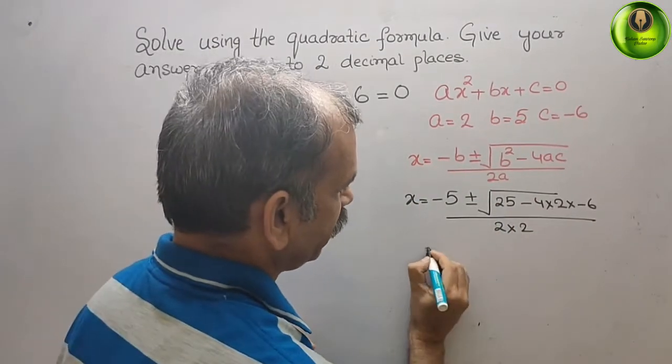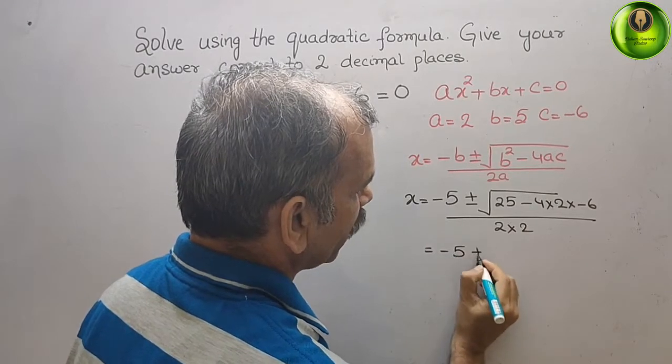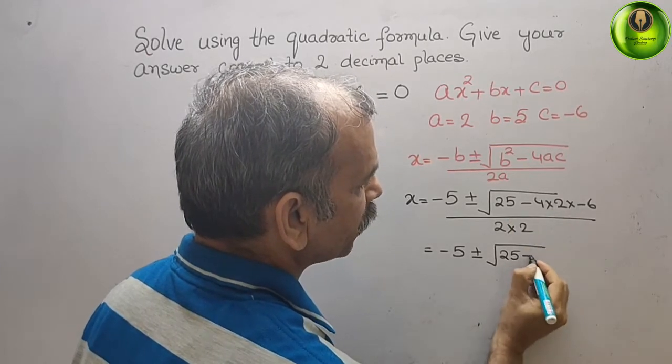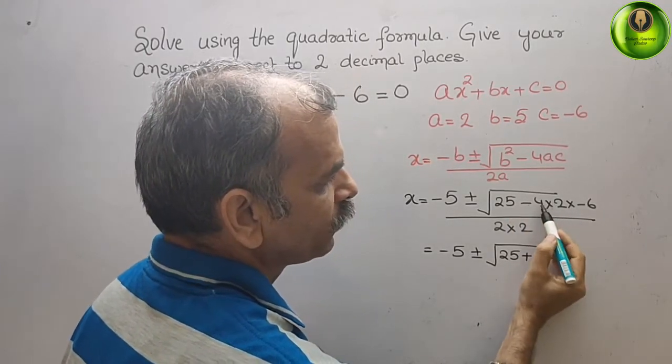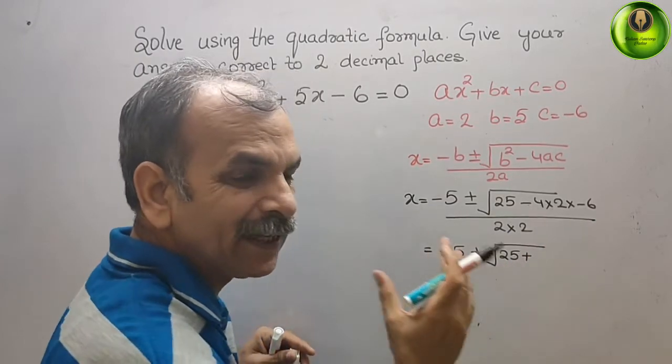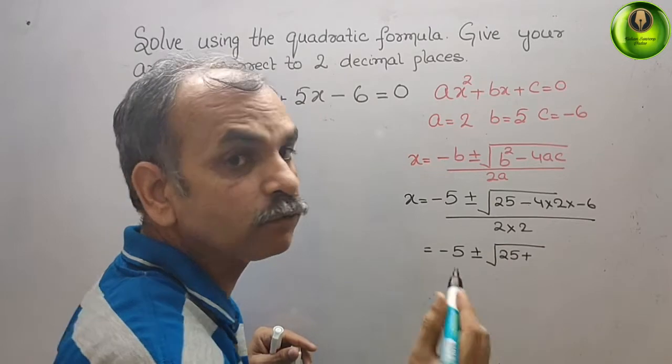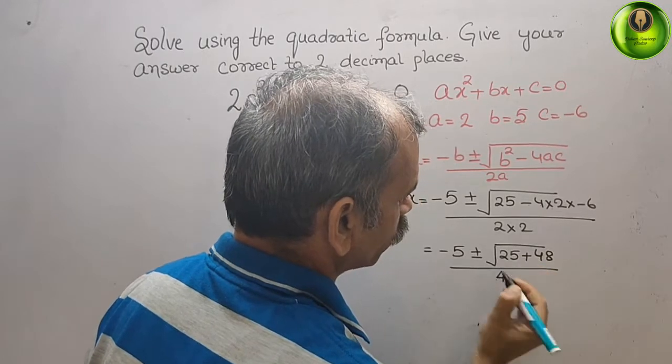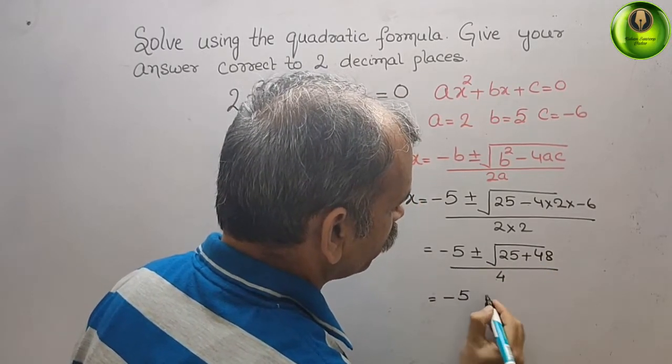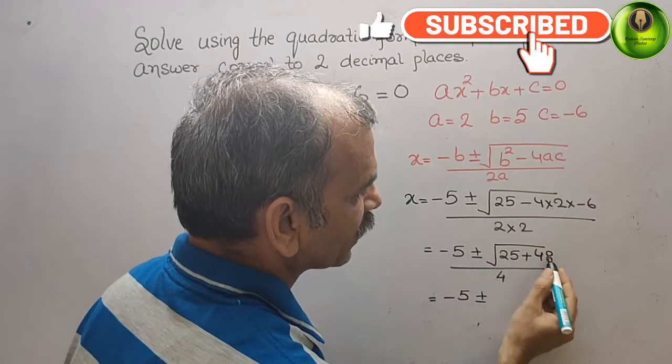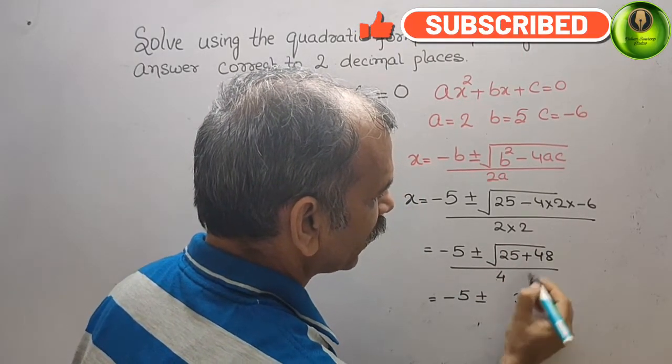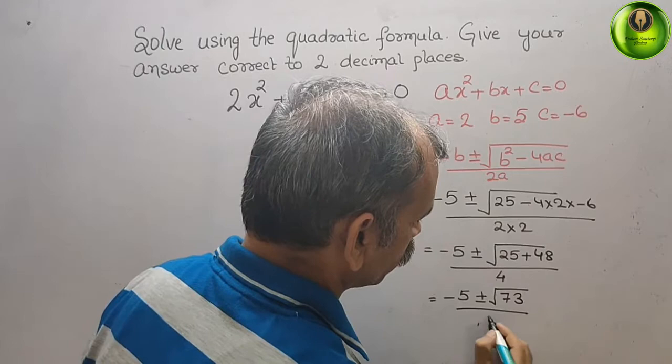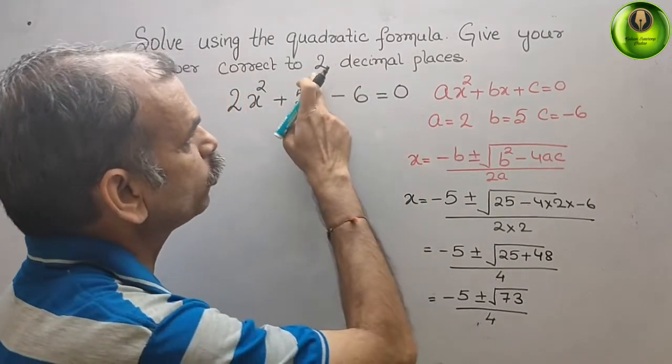Now solve this. We get -5 ± √(25 and here it comes as plus, minus minus into minus is plus. Now 4 × 2 is 8, 8 × 6 is 48) / (2 × 2 is 4). That gives you -5 ± √73 / 4. Now they have told you two decimal places, that means we should not leave in square root form.